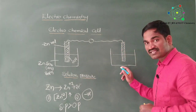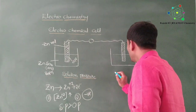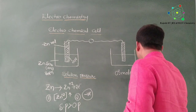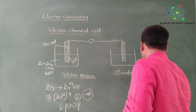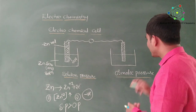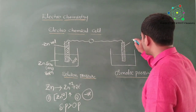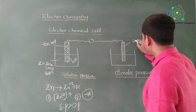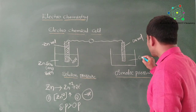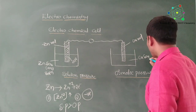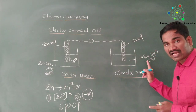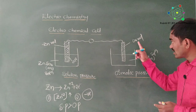Now coming to osmotic pressure — take the opposite example. Here I want to take a copper rod, and you take an aqueous copper sulfate solution. Whenever you take an aqueous copper sulfate solution and a copper rod and dip the rod into it, one type of mechanism is taking place.